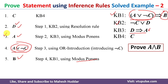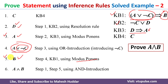In step 3 we have A, and in step 5 we have B. By introducing AND between these two, we get A ∧ B, which is exactly the final conclusion required for this problem.